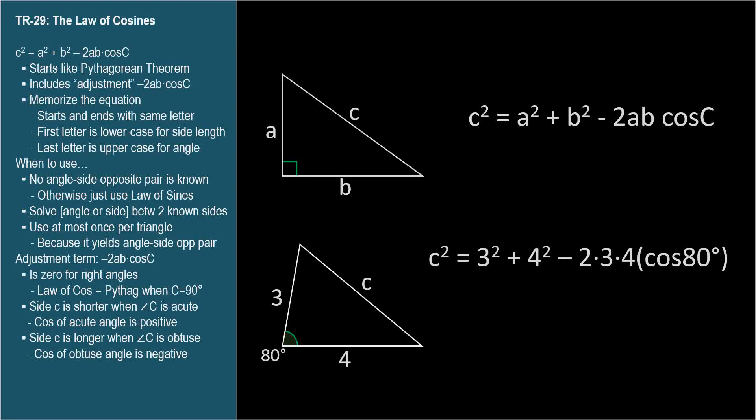c squared equals 3 squared plus 4 squared minus 2 times 3 times 4 times cosine 80. This is 9 plus 16 minus 2 times 3 times 4 is 24 times cosine 80 is 0.17365. Again we're assuming our given measurements are precise and we can carry several decimal places. c squared is 20.832 so c equals 4.564. So as expected, narrowing the angle reduced the opposite length because c is less than 5.